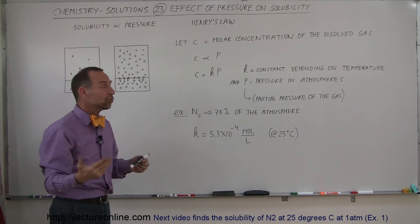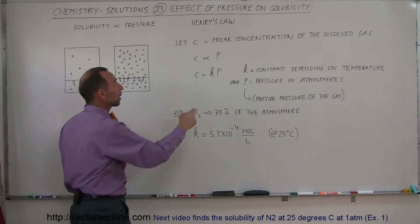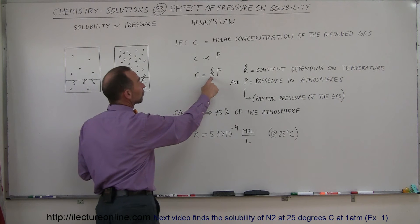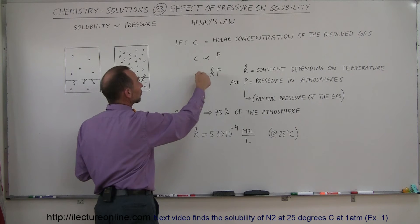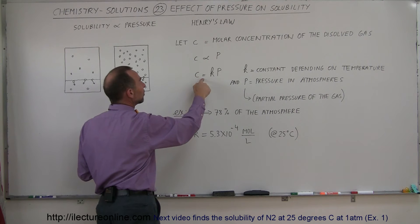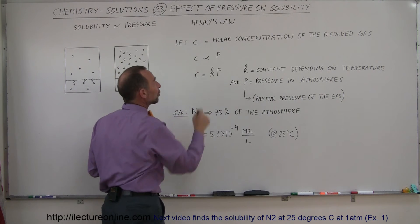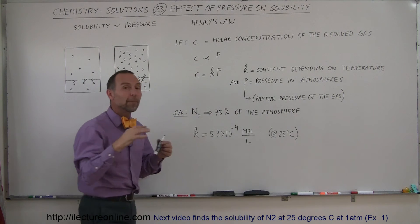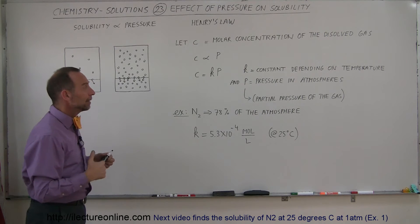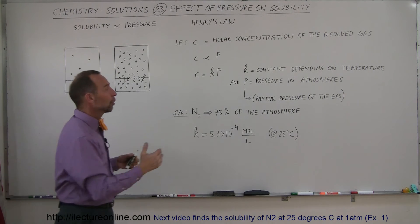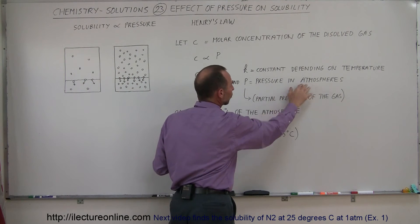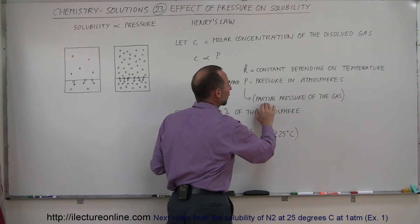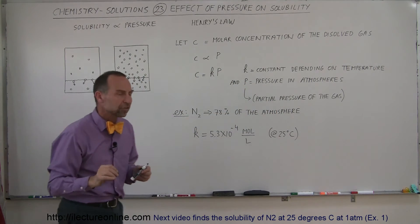To turn that proportionality into an equation, we need a constant of proportionality — let's call it K. So C, the molar concentration of the gas, is equal to K times the pressure above the solution. Typically, when we talk about the pressure — which will be in atmospheres — we talk about the partial pressure of that gas.